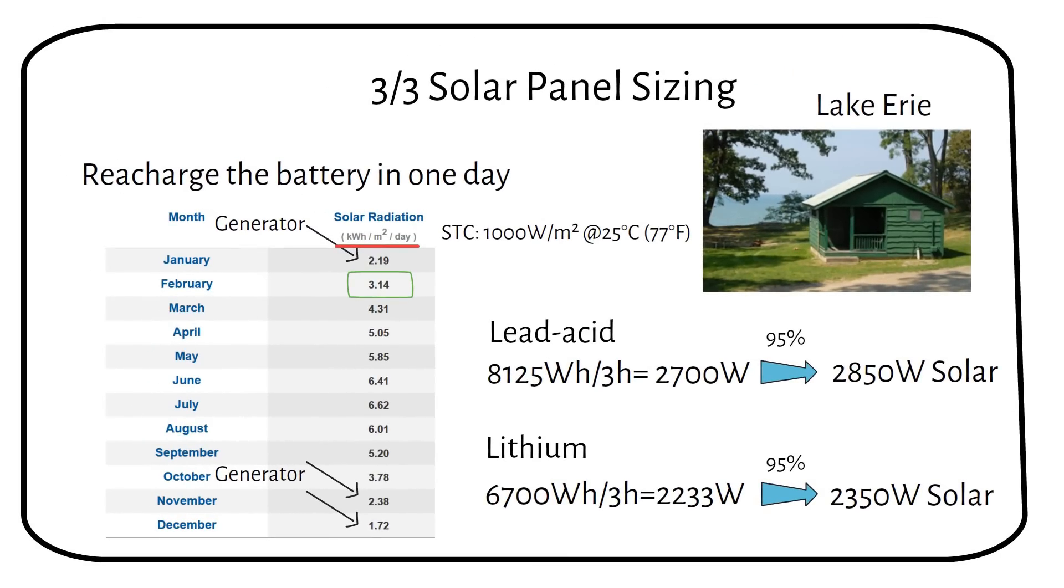Now that you've seen how to calculate the number of solar panels needed, how does this change your perspective on setting up an off-grid solar system? Are you more confident in planning your own setup?